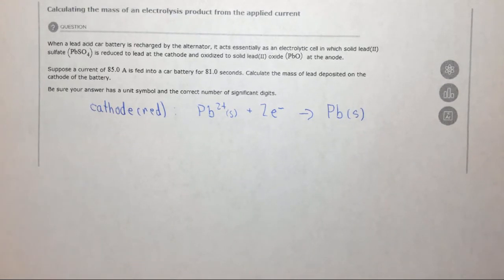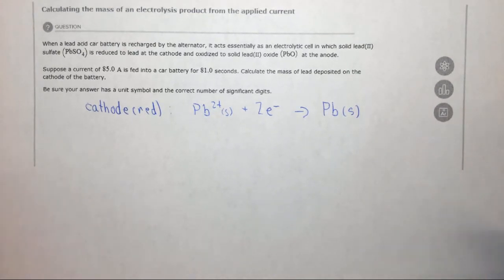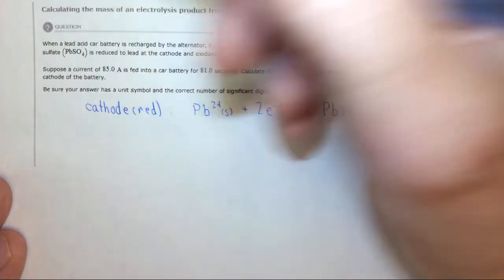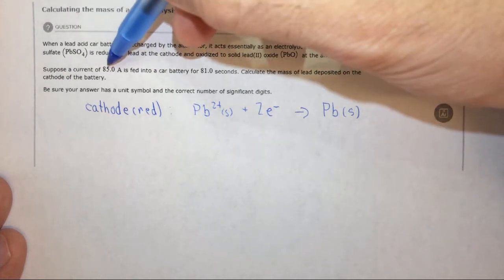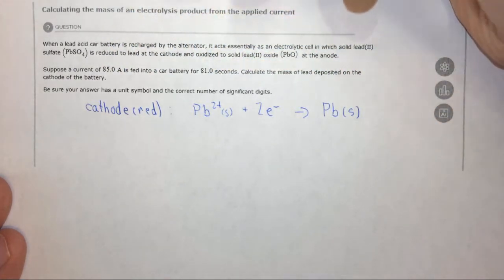Now you could do this entire problem as dimensional analysis, but I do want to show you how to do it based on a couple of the previous examples on this playlist or previous problems you may have done. So the first thing I want to do is I want to figure out the charge that's required, that essentially is given off, with 85 amps for 81 seconds. And you'll recall that charge equals the current times the time.